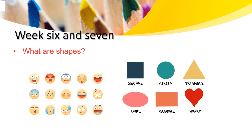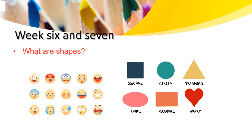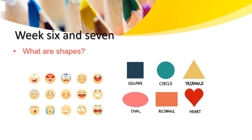Hello learners, let us talk about week six and seven. So what are shapes? If you look at your right, you can see some examples. You are seeing an oval, a circle, a square, a rectangle, a heart, and a triangle.